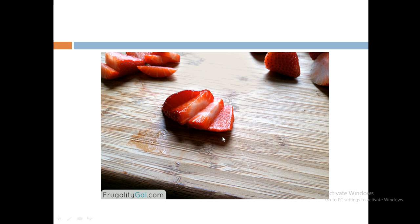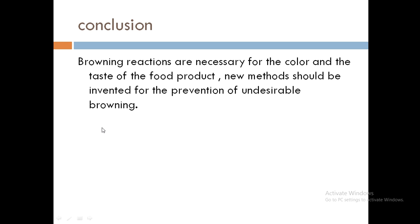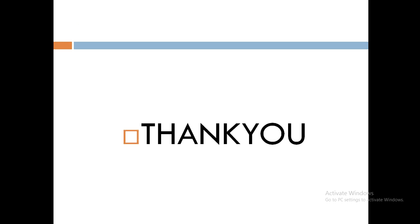Here is the picture of the strawberry showing ascorbic acid browning. In conclusion, browning reactions are necessary for the color and taste of food products. New methods should be invented for the prevention of undesirable browning. Food technologists are working on new methods to prevent browning because no one wants food that is excessively dark brown in color. Desirable browning is acceptable, but undesirable changes do happen in food, so researchers are trying to reduce unwanted browning. Thank you.